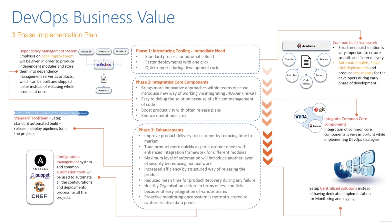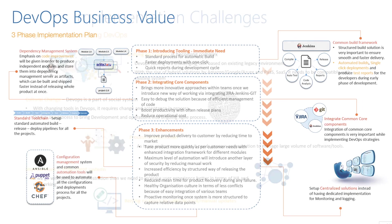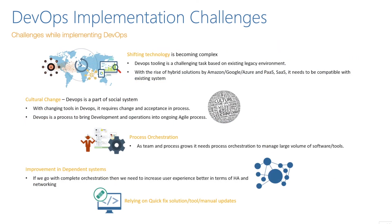Phase three is enhancement — improving product delivery to customers by reducing time to market, tuning more products more quickly as per customer needs. With an enhanced integration framework for different modules, we can have maximum automation which introduces another layer of security — we can have penetration tests and security tests within our Jenkins pipeline.